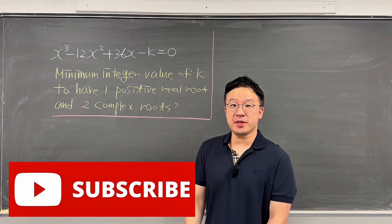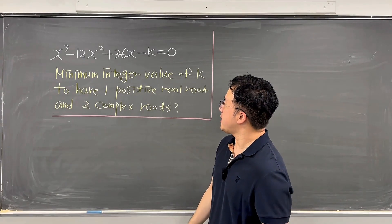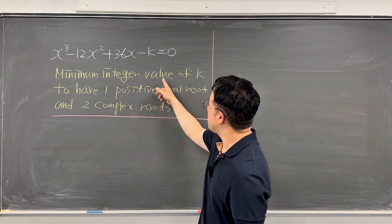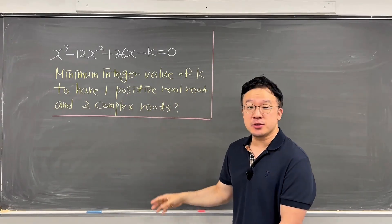Okay, we have an interesting simple example here. We have x³-12x²+36x-k=0. Then the question is, what's the minimum integer value of k to have one positive real root and two complex roots?